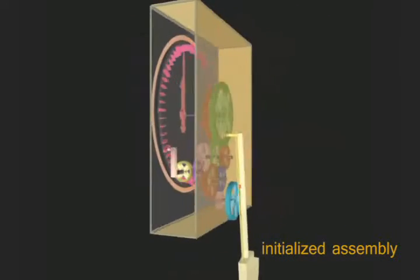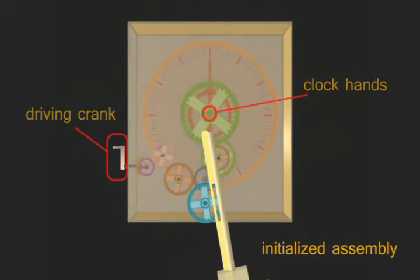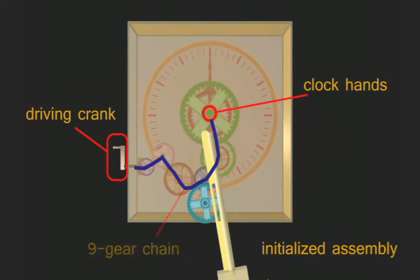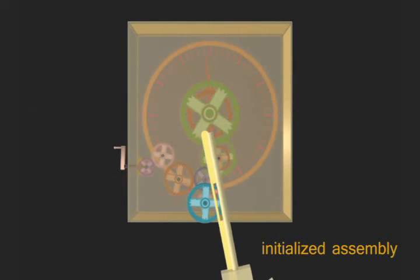This clock toy demonstrates our algorithm's support for long kinematic chains. A user-initialized assembly contains a nine-gear chain that transmits the driving crank's motion to the clock hands.